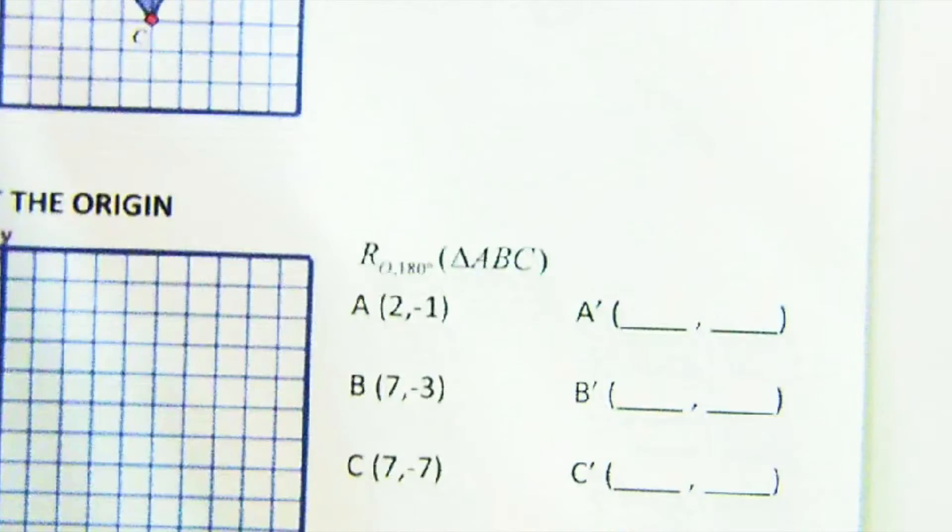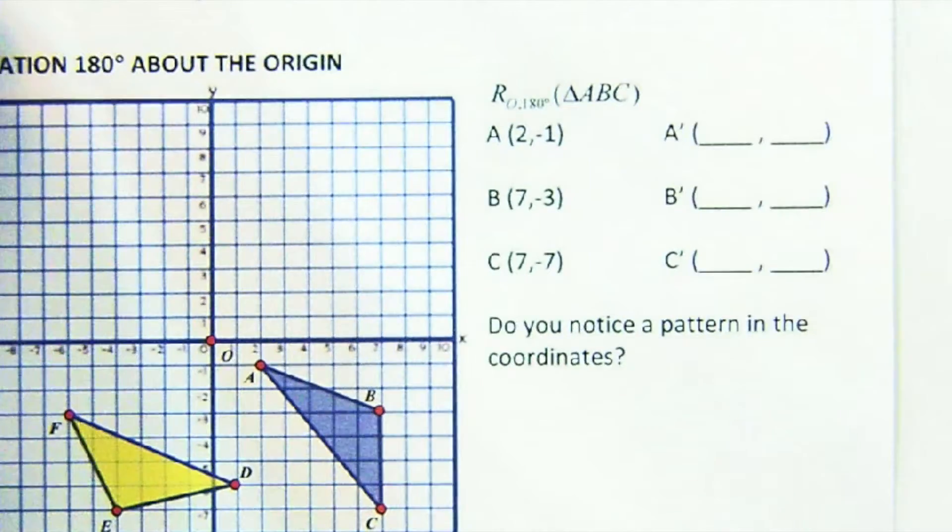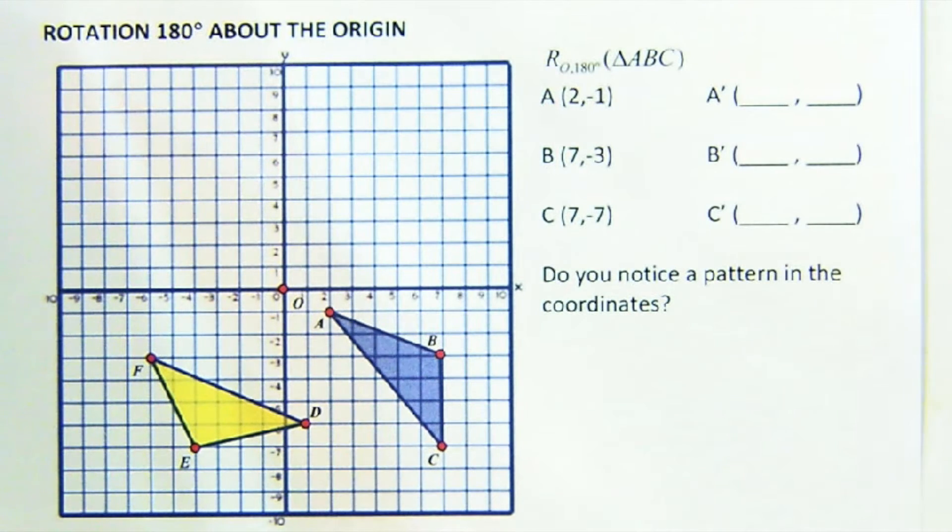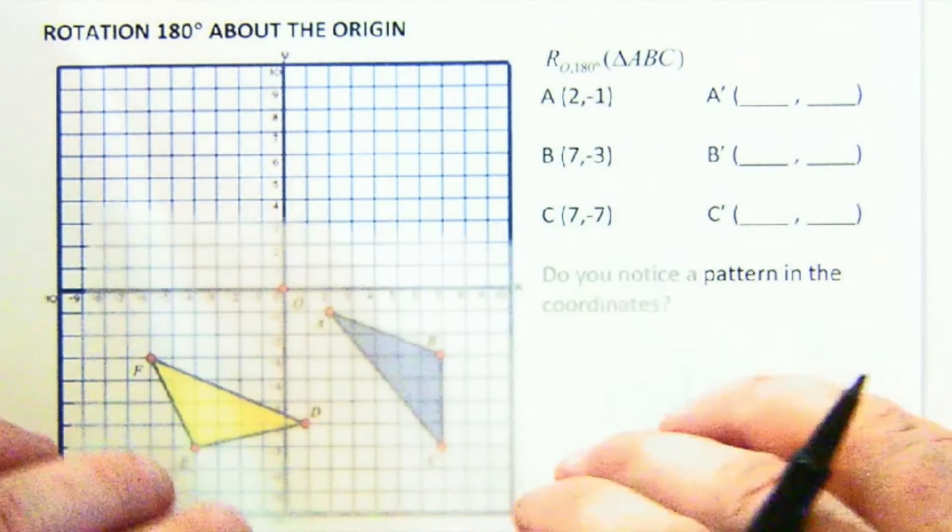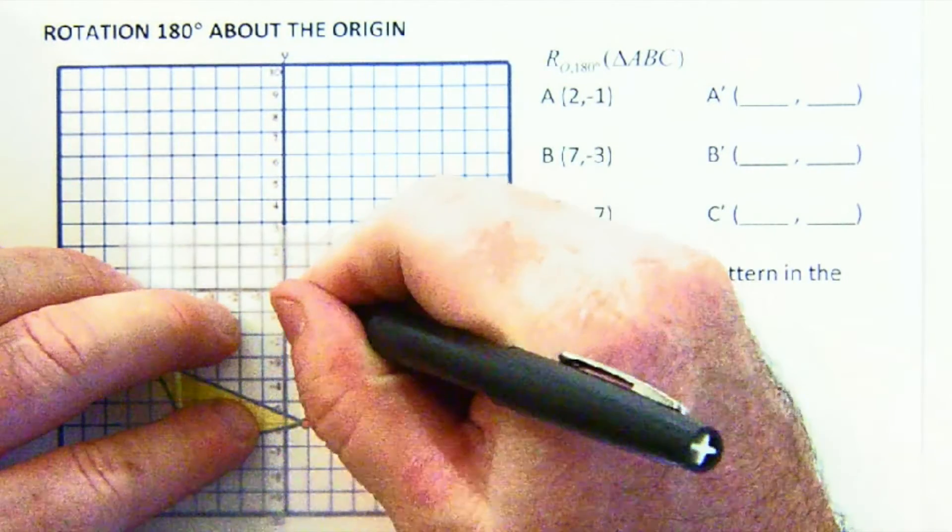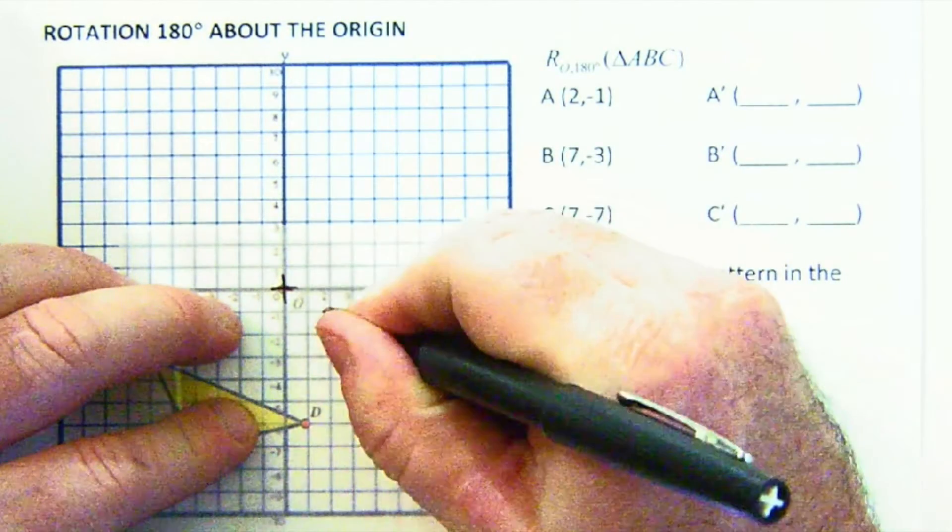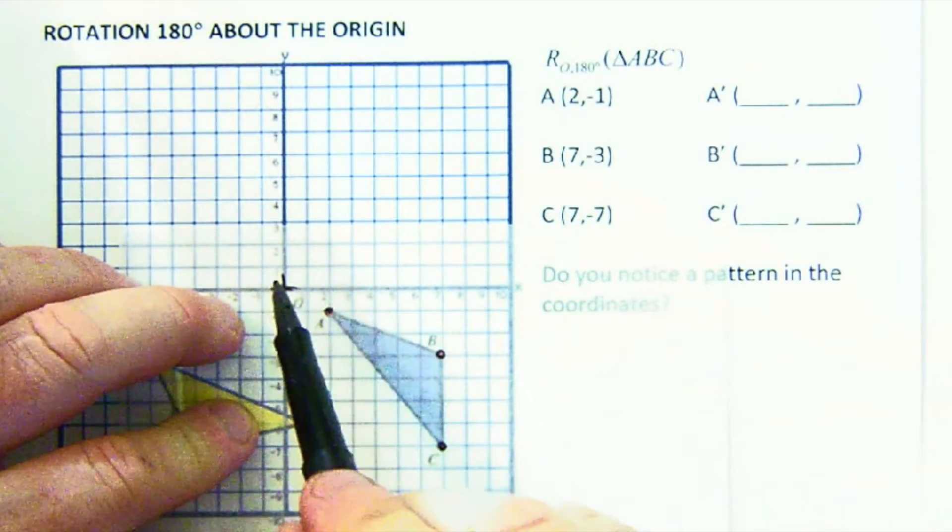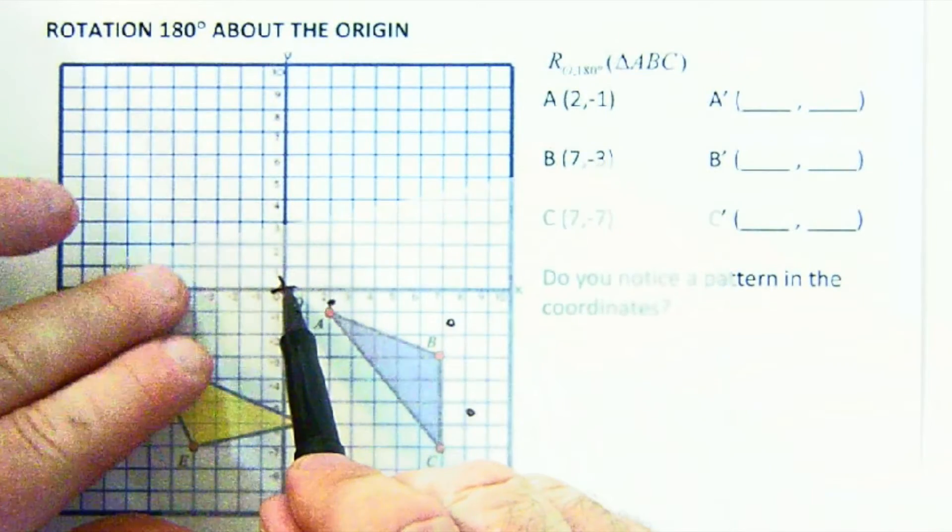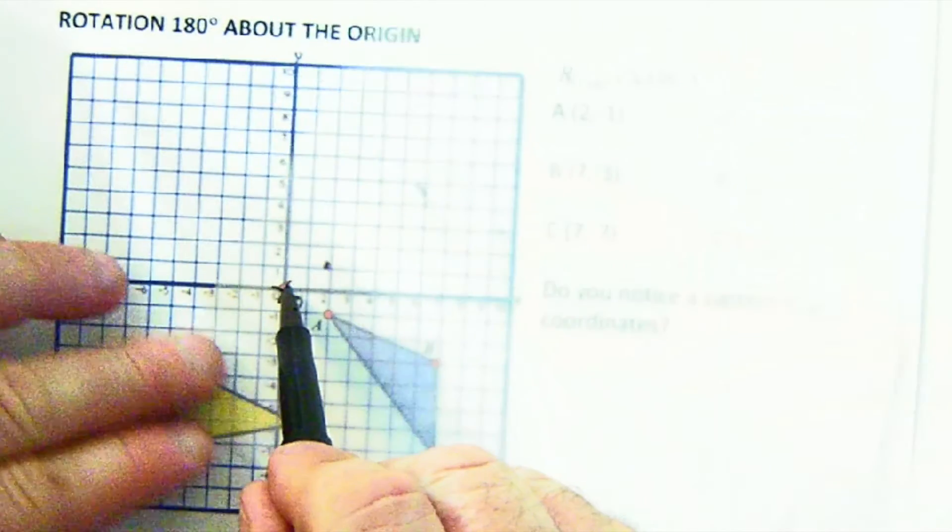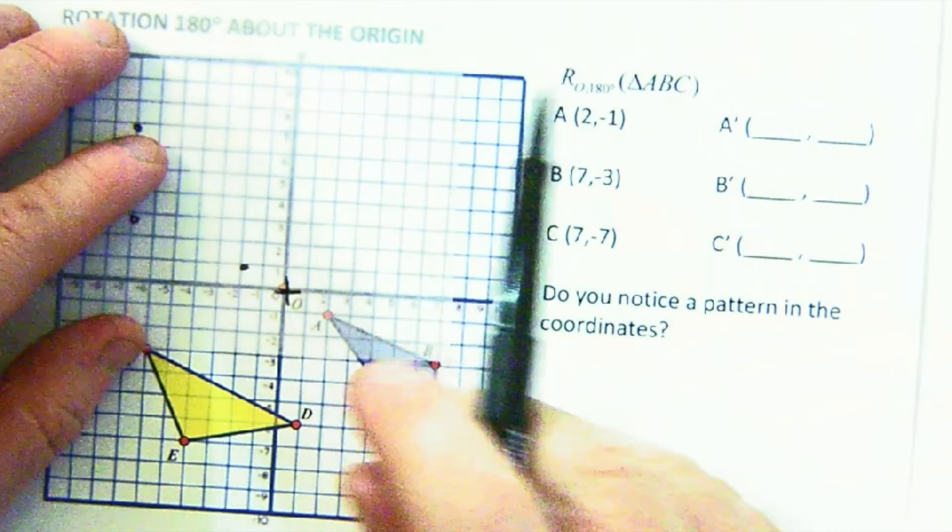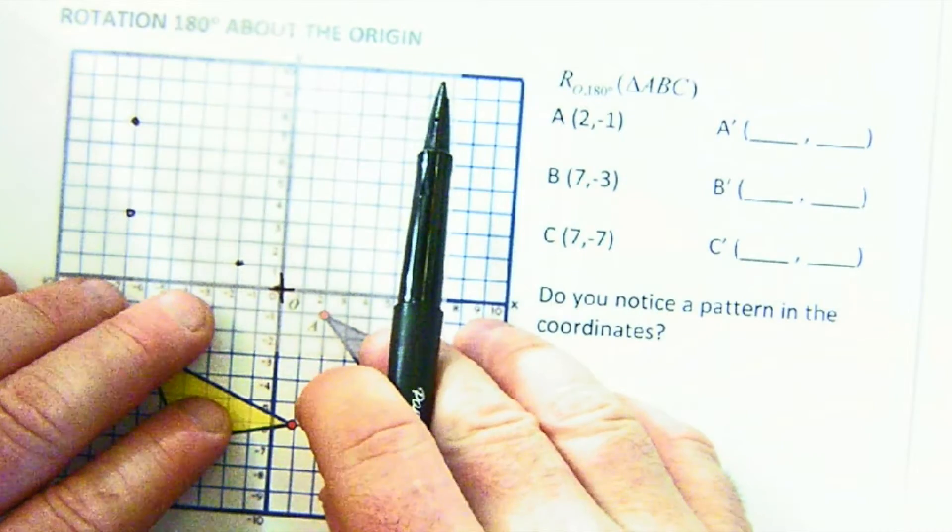All right, let's look at the next one. We can assume something similar will happen here. This is a rotation of 180 degrees. Let's pull out our handy dandy patty paper. I'm going to mark my A, my B, and my C, and I'm going to make a little plus sign here so that I can see when I get all the way around.